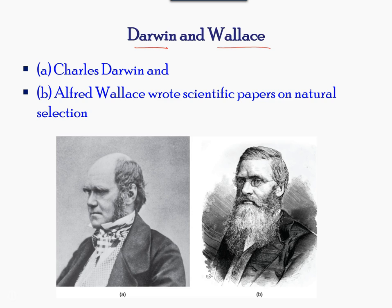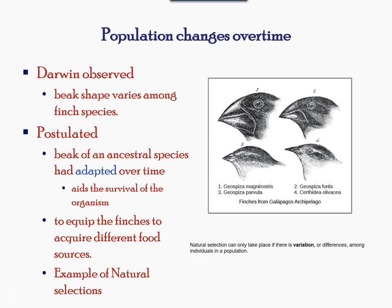In his famous study involving the finch species, he observed a series of beak sizes and shapes. He postulated that the beak shapes were adapted over time to equip the finches to acquire different food sources. This mechanism was called natural selection.